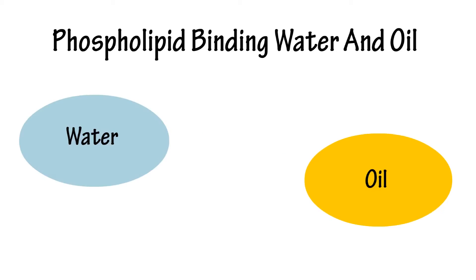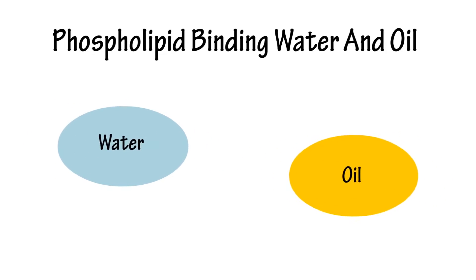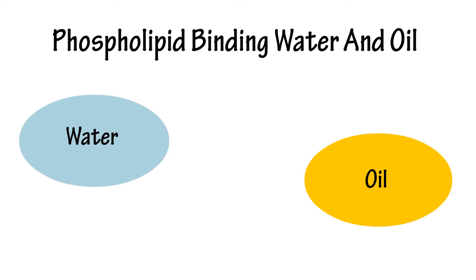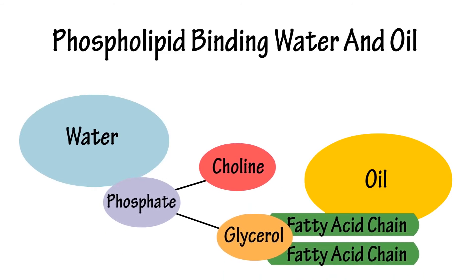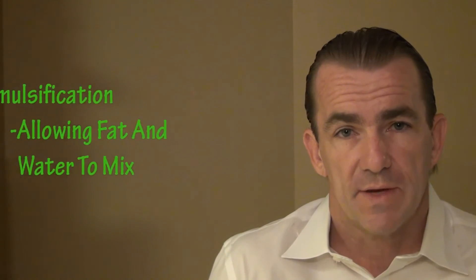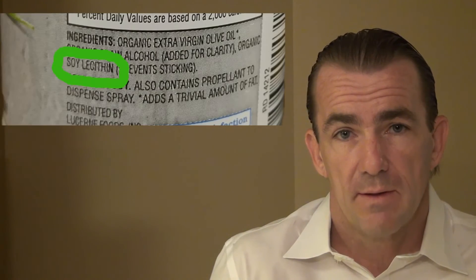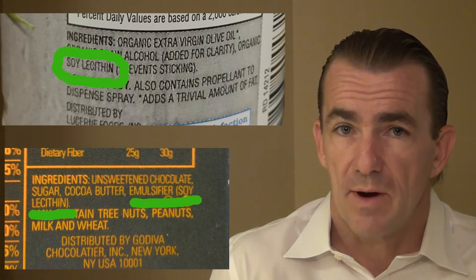Now, let's take a water drop and an oil drop. Normally, they will not bind. However, when we throw our phospholipid in, the phosphate group binds to the water drop, and the fatty acids bind to the oil drop. This process is known as emulsification, and lecithin is the great emulsifier. You'll find it in many processed foods, such as cooking sprays, and especially chocolate bars.